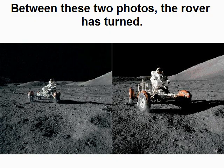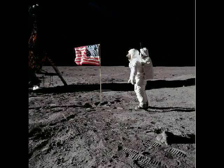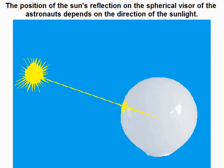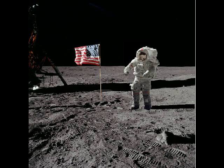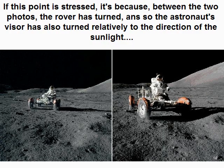Between these two photos, the rover has turned. The position of the sun's reflection on the spherical visor of the astronaut depends on the direction of the sunlight. If this point is at rest, it's because between the two photos the rover has turned, and so the astronaut's visor has also turned relatively to the direction of the sunlight.